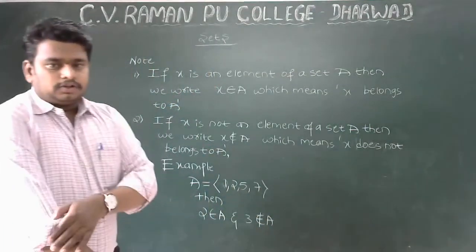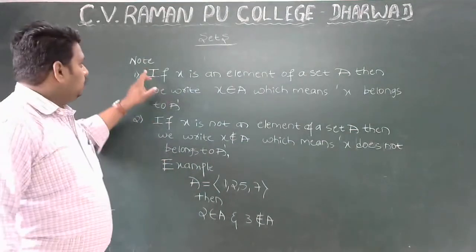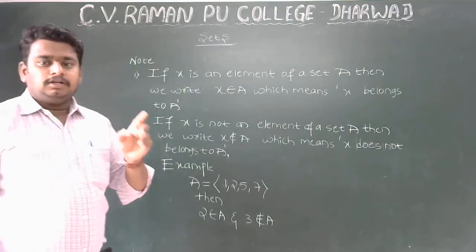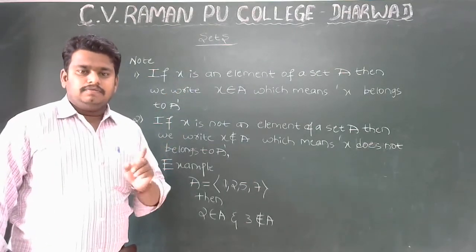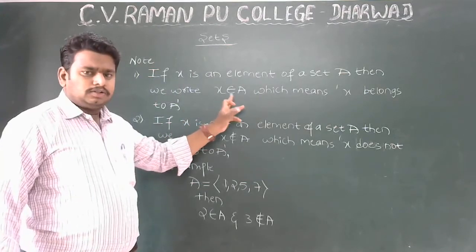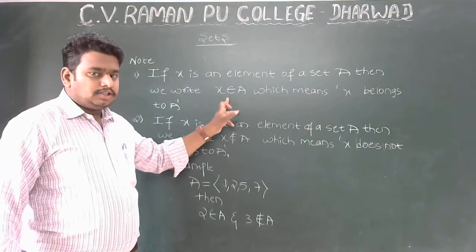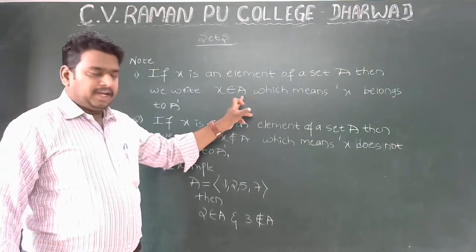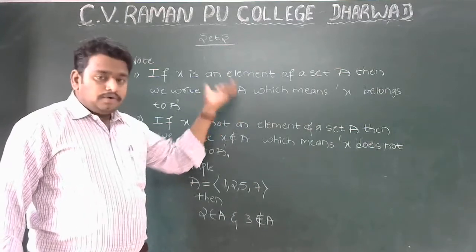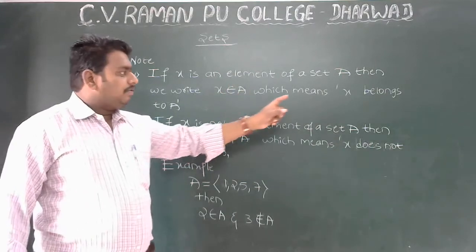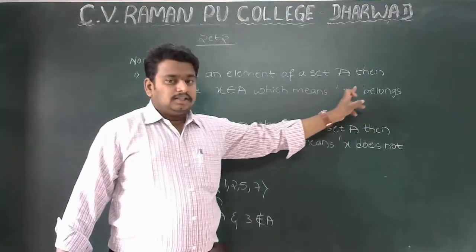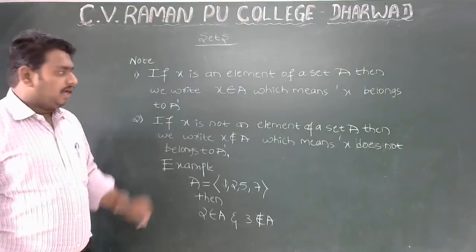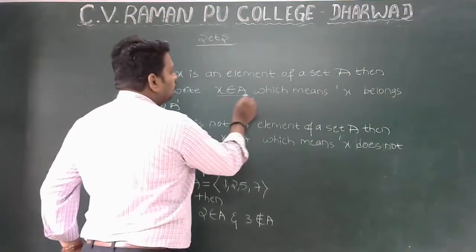The second concept: if x is an element of set A, then we write it symbolically using the belongs-to symbol, read as 'x belongs to A'.